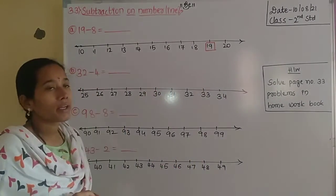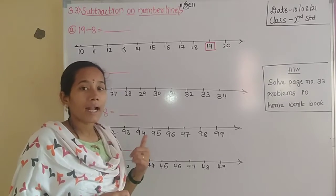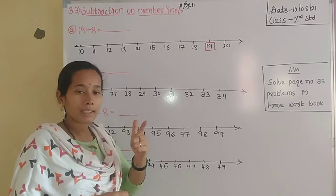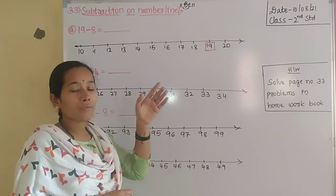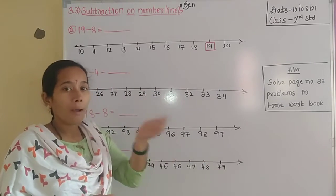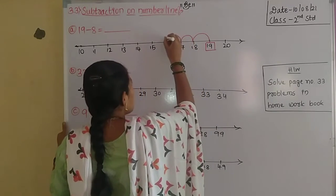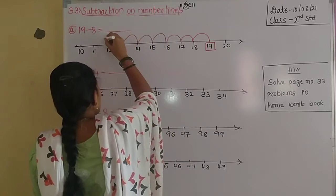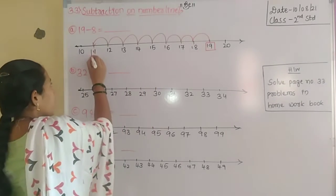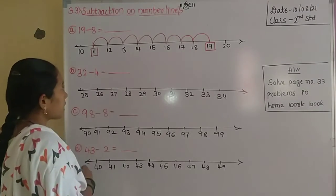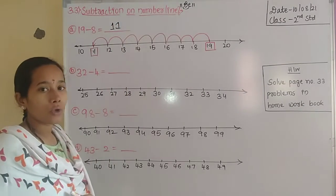Next, 8 is the subtrahend, which determines our movement. In addition we move forward, but in subtraction we always move backward. So here we move 8 steps backward from 19 — 1, 2, 3, 4, 5, 6, 7, 8. After moving 8 steps backward from 19 we get the number 11, which is the answer, called the difference. So 19 minus 8 equals 11.